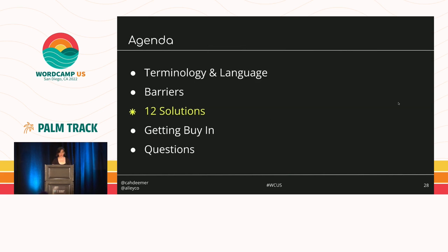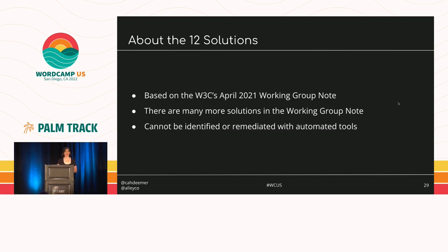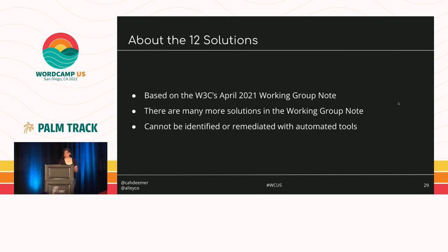Just checking in with our agenda — we've talked about language, terminology, and barriers, and now we're going to go into those 12 solutions, also known as design patterns that help make digital content usable by people with cognitive disabilities. All of these solutions are from the W3C's April 2021 working group note on cognitive disabilities, which includes many more — this is just Christina's top 12. I also want to note that these are highly contextual and violations can't be identified by automated testing tools alone. Cognitive accessibility involves a lot of critical thinking, experimentation, and listening. It's really hard to get this right without talking to users.